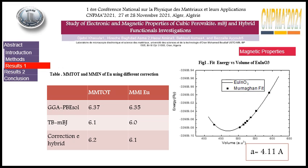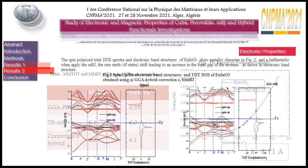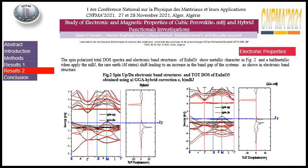The figure below shows the fit of the energy and the volume of our material. The second part is about the electronic properties. The spin-polarized total and partial density of states and band structure show a metallic character when using the hybrid correction, and a half-metallic character when applying the MBJ. The rare earth shift leads to an increase in the band gap of the system, as shown in the figure below.